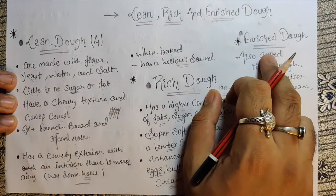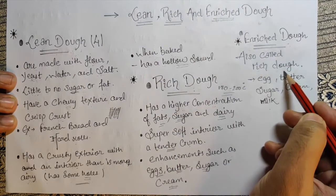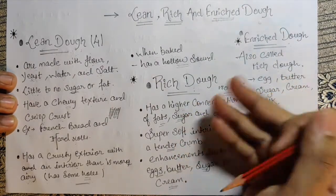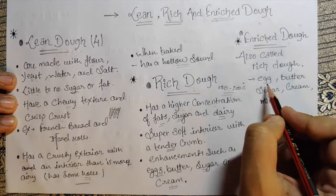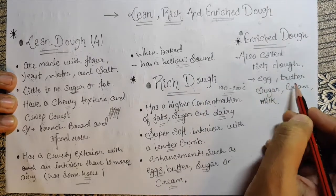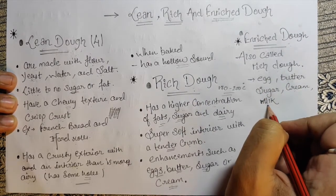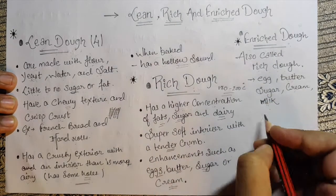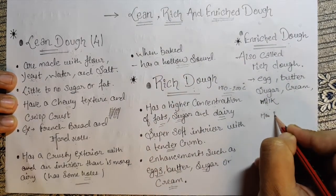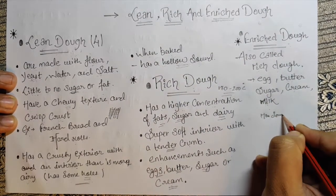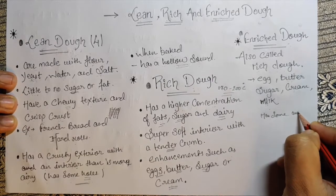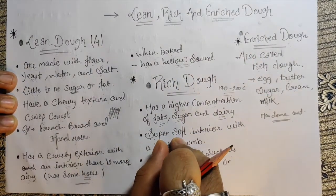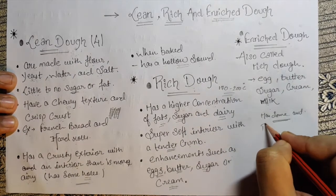The third type is enriched dough — also called rich dough, but rich dough ki tarah nahi hai. Enriched dough also has eggs, butter, cream, sugar, and milk, but not as much fat as rich dough — it has some amount of fat, but not as much as rich dough.